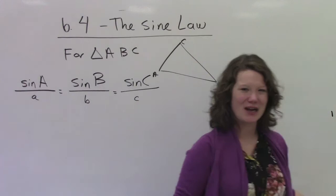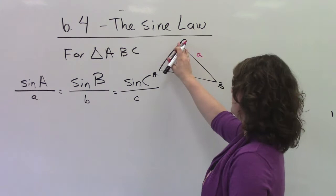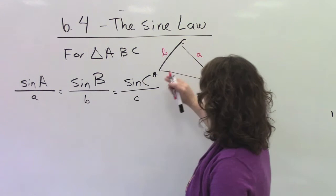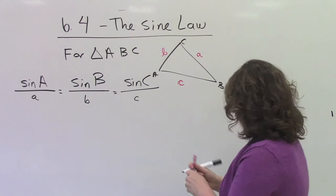Now, we can name the sides a couple of different things. We can either name this guy little a, or we can call it CB. We can either call this C, or we can call it AB. We can either call this little b, or AC, or CA. It doesn't really matter.